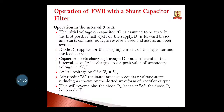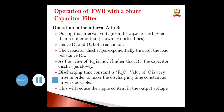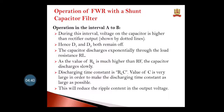After point A, the secondary voltage starts reducing and therefore this will reverse bias diode D1 and D1 is turned off. During the interval A to B, the voltage on the capacitor is higher than the rectified output and hence D1 and D2 both remain off. The capacitor discharges exponentially through the load resistance RL. The discharging time is RL times C, and this reduces the ripple content in the output voltage.